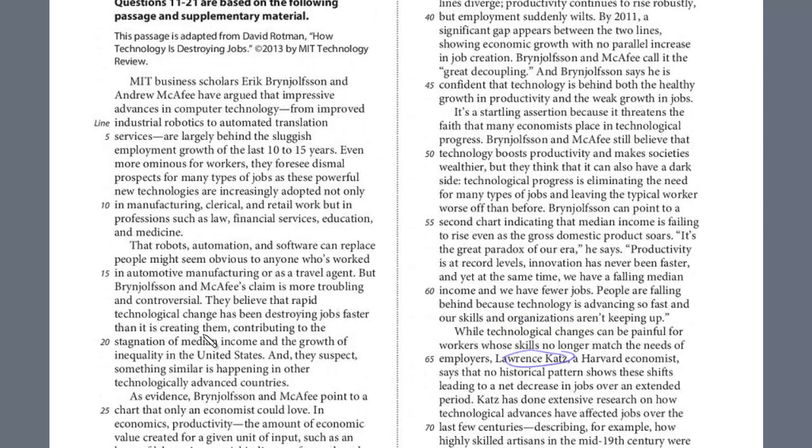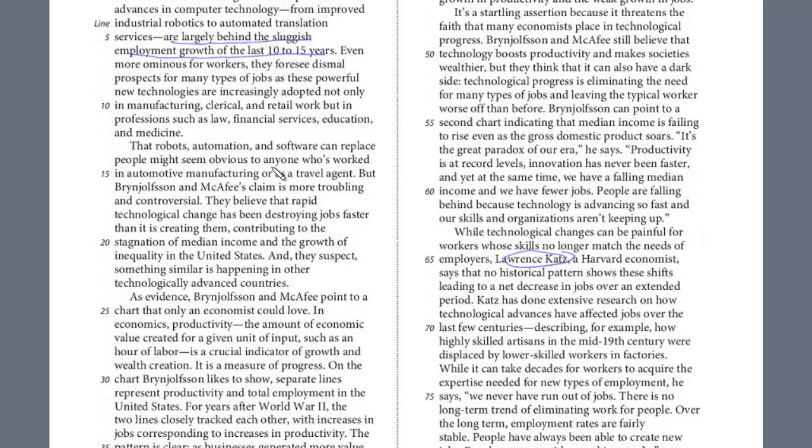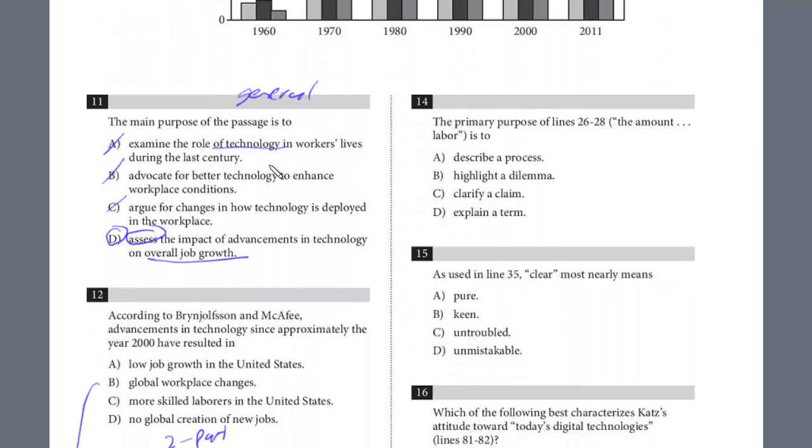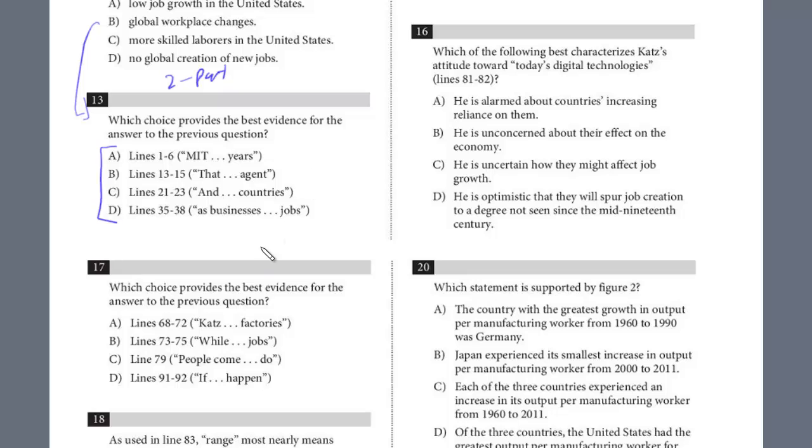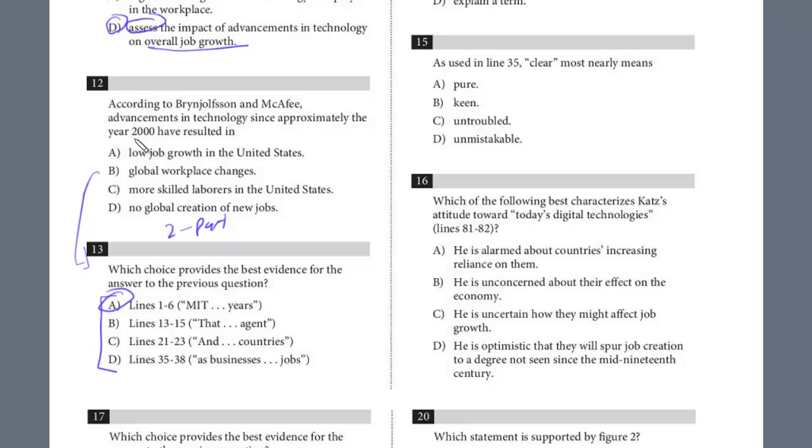So at the beginning of the passage, these two scholars have argued that impressive advances in technology from improved industrial robotics to automated translation services are largely behind the sluggish employment growth of the last 10 to 15 years. So this is what I call a bonus two-point question. And when at the very beginning of the range, in 1 through 6, you see the answer and then you really get two questions right away. So it really saves a lot of time. And so we can answer both of these. The best evidence, we know it's from 1 to 6. And now we can go back and answer 12. Since 2000, we know that technology has resulted in the low job growth in the U.S. And that was sort of what the graph confirmed as well.